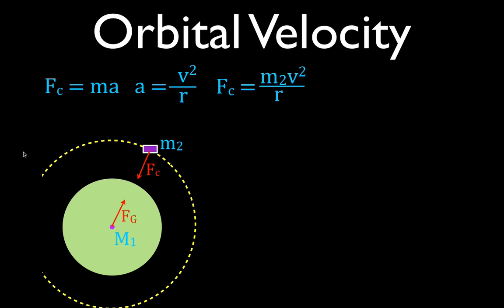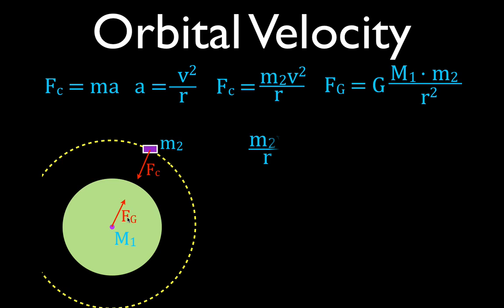So this is the equation for the centripetal force. And this force equals Newton's law of universal gravitation, which says that G — the gravitational constant — times M1 times M2, divided by the square of the distance between the two objects, is equal to the force. We said earlier that these two forces are equal in magnitude but opposite in direction, so we can set those two equations equal to each other and solve for the velocity.